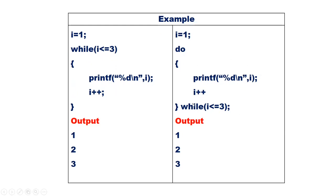Print i — 2 will be printed. i++, the value of i now becomes 3. While i less than or equal to 3 — condition true. Again goes back to the beginning of the loop, print i — 3 will be printed. i++, i now becomes 4. While i less than or equal to 3 — condition false, so it exits from the loop.